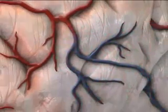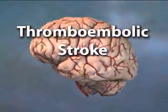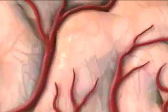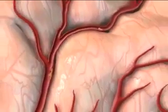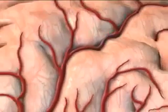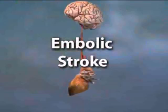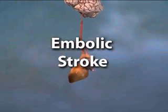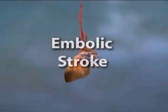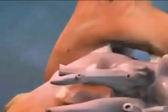A thromboembolic stroke occurs when a clot breaks off from an arteriosclerotic plaque and lodges in a downstream vessel, blocking blood flow. An embolic stroke occurs when a clot travels to the brain from elsewhere in the body. Patients with atrial fibrillation or who have suffered a heart attack are at high risk of embolic stroke.